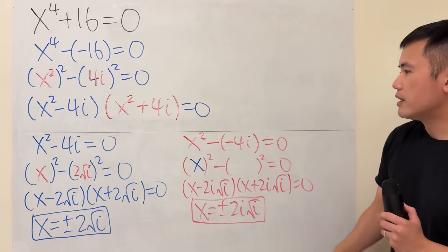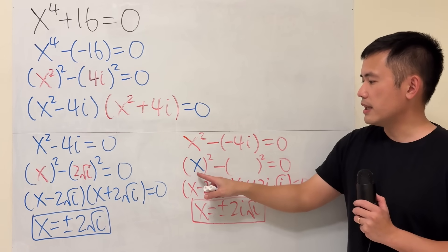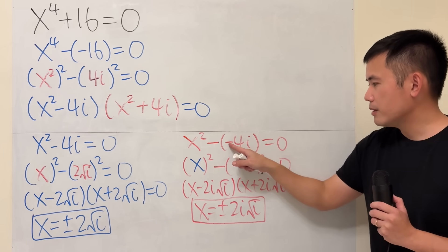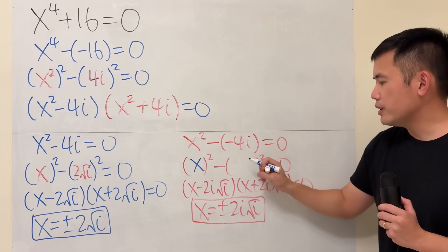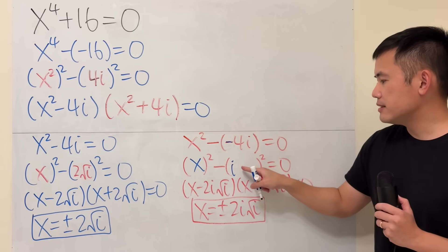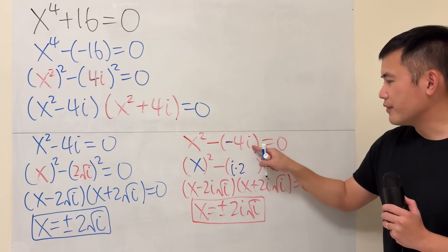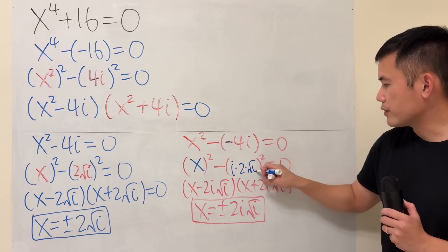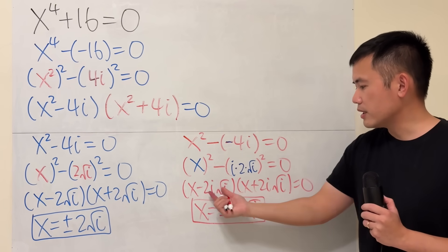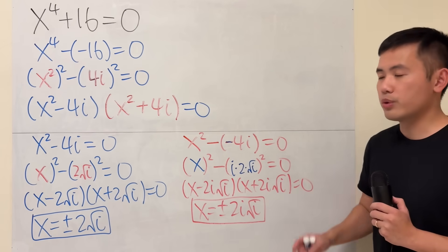For the second factor, you put plus as minus minus, then write x-squared minus... This is a little trickier. For this negative, i-squared gives us this negative, and 2-squared gives us 4. Then square root of i-squared gives us i. You factor it, solve it, and get x is equal to plus or minus 2i square root of i.